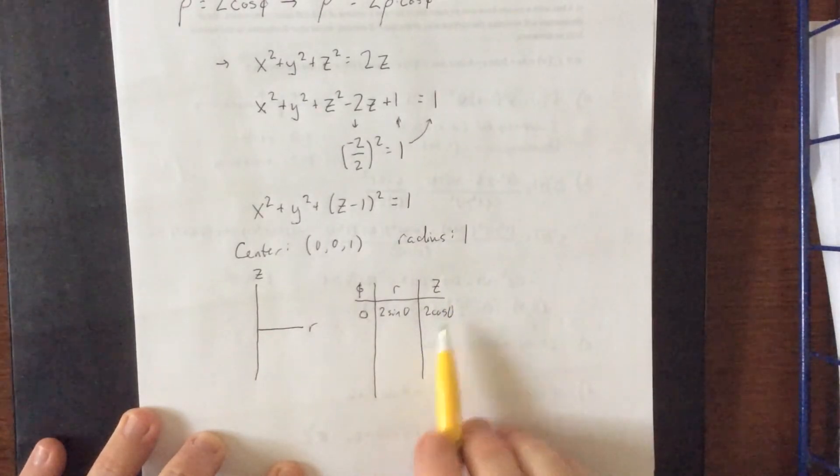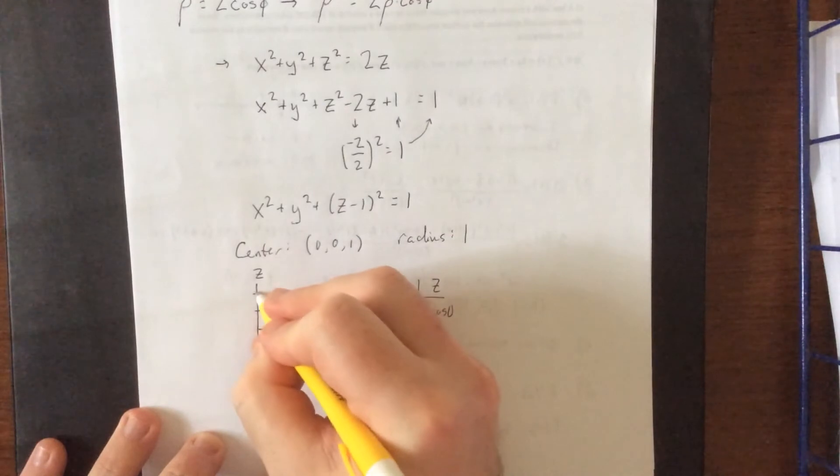And z is equal to 2 times the cosine of 0. That would be R is 0, z is 2. So that's going to be right up here.